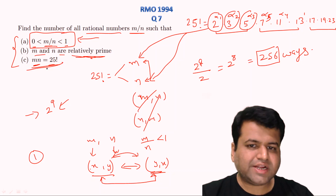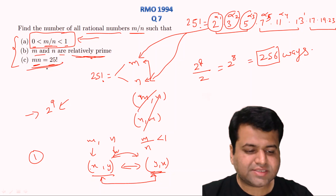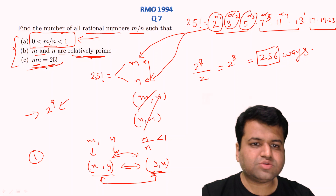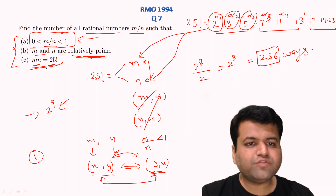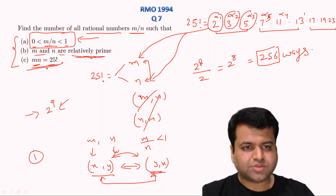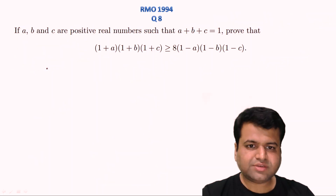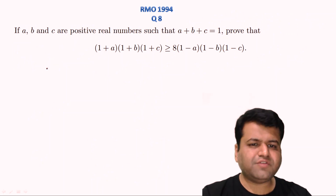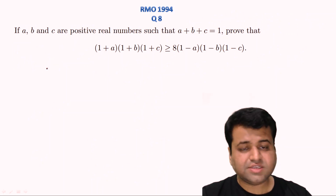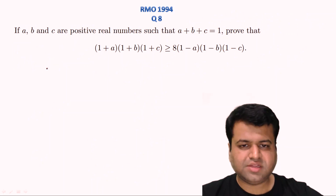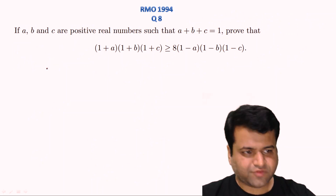That's it for question 7. The final answer is 256 ways. Now let's proceed to the next question — question number 8. This is a very, very easy question from inequalities.